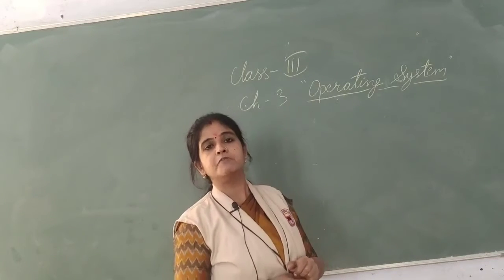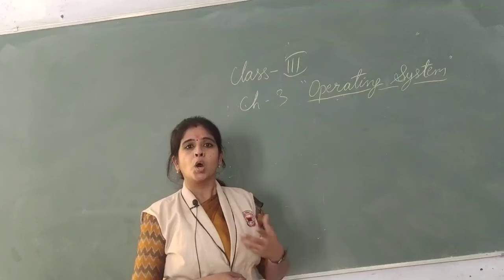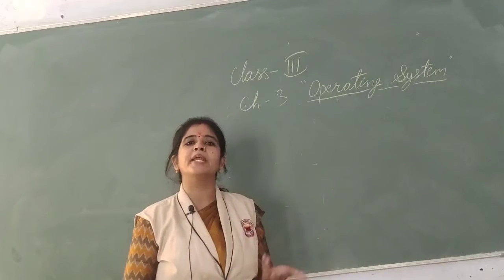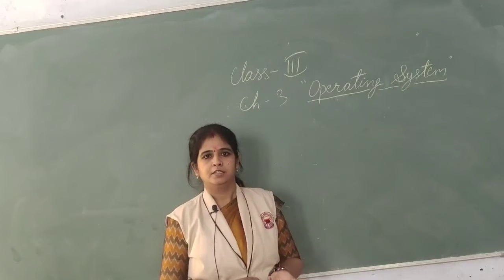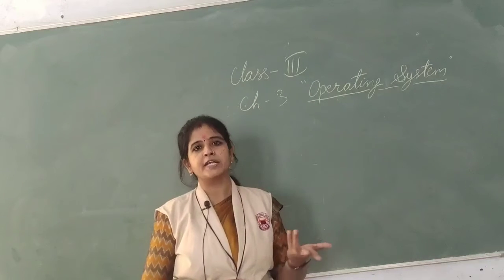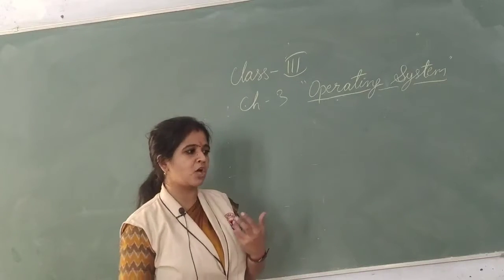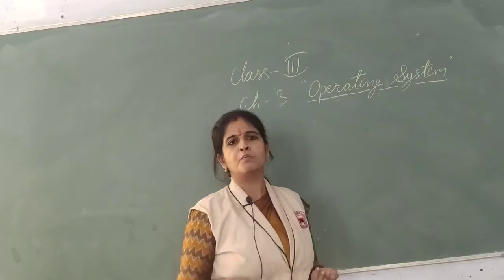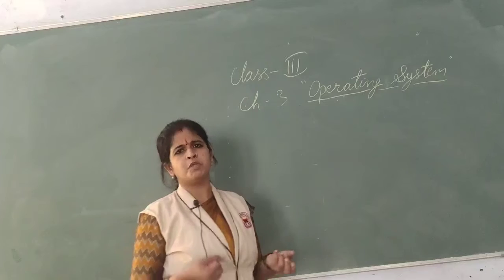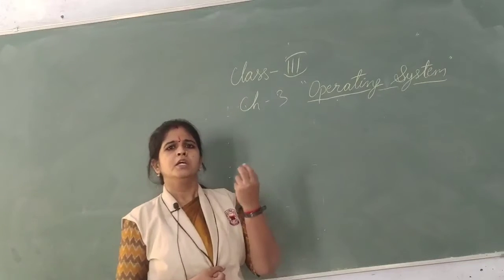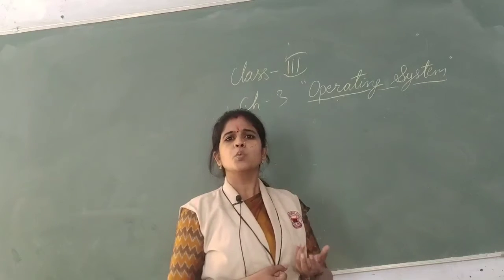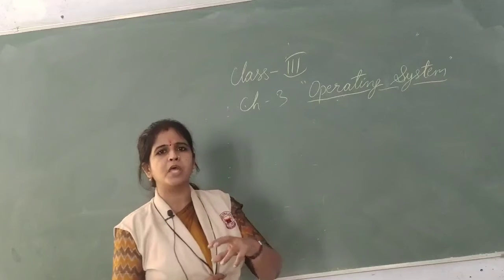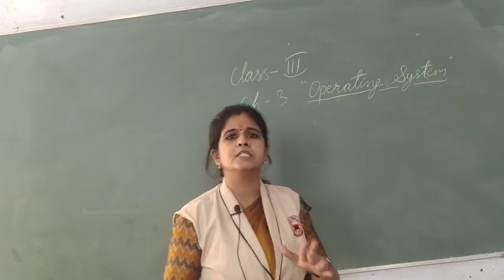What is an operating system? An operating system is a software which is used to operate any device. If I talk about computers, computers have many parts — keyboard, mouse, CPU, memory, speakers — and one thing is required to control all of them, and that is your operating system.